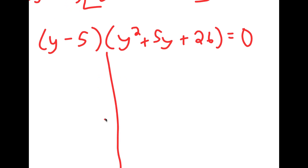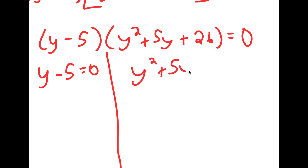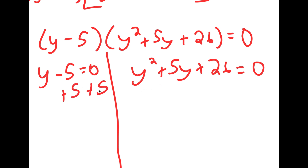Now from here, this gives me two equations. I get y minus 5 is equal to 0, and I also have y squared plus 5y plus 26 is equal to 0. So for y minus 5 equals 0, this is simple — all I have to do is add 5 on both sides, and I get y equals 5.